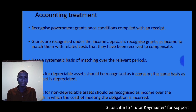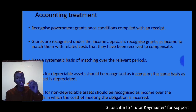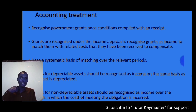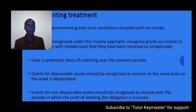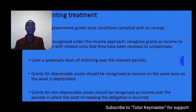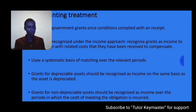For example, if you have received a government grant to acquire a long-term asset with a useful life of five years, you will systematically recognize grant income in profit or loss over five years. Grants for depreciable assets should be recognized as income on a systematic basis as the asset is depreciated. Don't forget to also depreciate the asset. Grants for non-depreciable assets should be recognized as income over the periods in which the cost of meeting the obligation is incurred — these are essentially grants related to income.